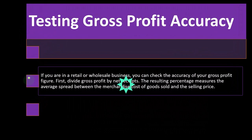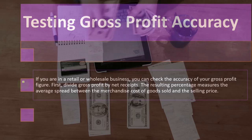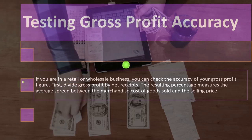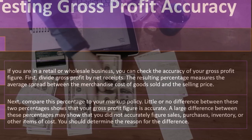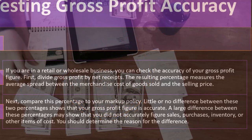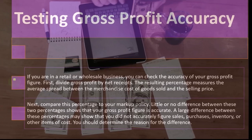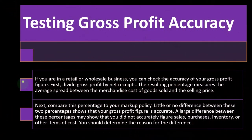Testing gross profit for accuracy: if you are in a retail or wholesale business, you can check the accuracy of your gross profit figure. First, divide gross profit by net receipts — the resulting percent measures the average spread between merchandise cost of goods sold and the selling price. Next, compare this percent to your markup policy. In other words, think about the relationship and ratios between the gross profit and your sales.